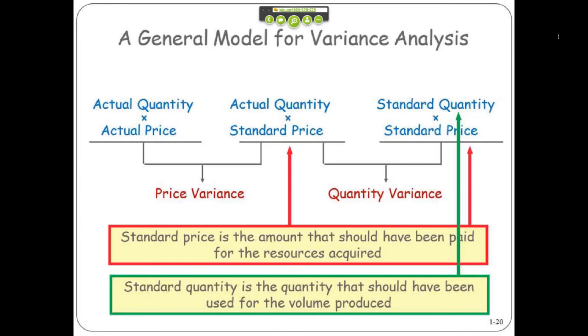So you can then say the difference from here to here is due to quantity variance. And the difference between your actuals and your standard price is your price variance.